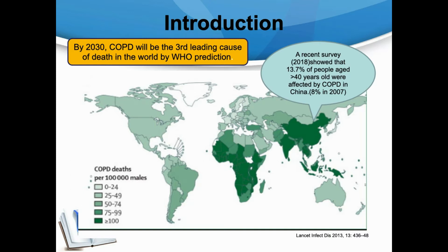This picture shows the epidemiology of COPD deaths in males in the world. Most of the mortality of COPD happened in developing countries because of city and domestic pollution and biomass fuel in domestic cooking and heating. We can see that China is one of the highest mortality countries. By 2030, COPD will be the third leading cause of death in the world by WHO prediction. A survey showed that 13.7% of people aged about 40 years old were affected by COPD in China.